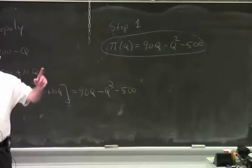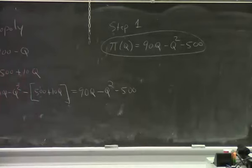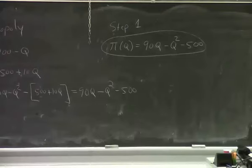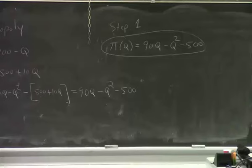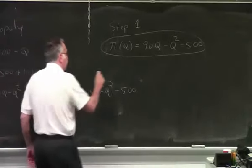Once we've done this, we've found our objective function, then what's the next step? Find the first order condition. And tell us what the first order condition will be. Find the first derivative of the objective function and set it equal to zero. That's the first order condition. So π'(q), that's step two.